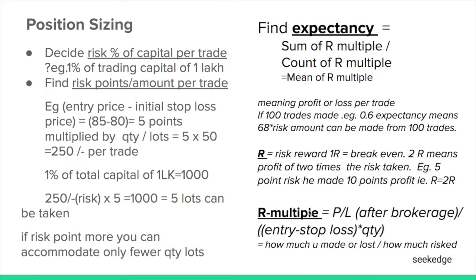R is the risk-reward ratio. One R means you are risking 50 rupees and your target profit is also 50 rupees — that is one R. If you are taking 50 rupees of risk and targeting two R, your target profit is 100 rupees. R-multiple is the total profit that you made divided by how much you risked to get that profit. For the risk that you've taken, what is the profit that you got — that is what R-multiple measures.